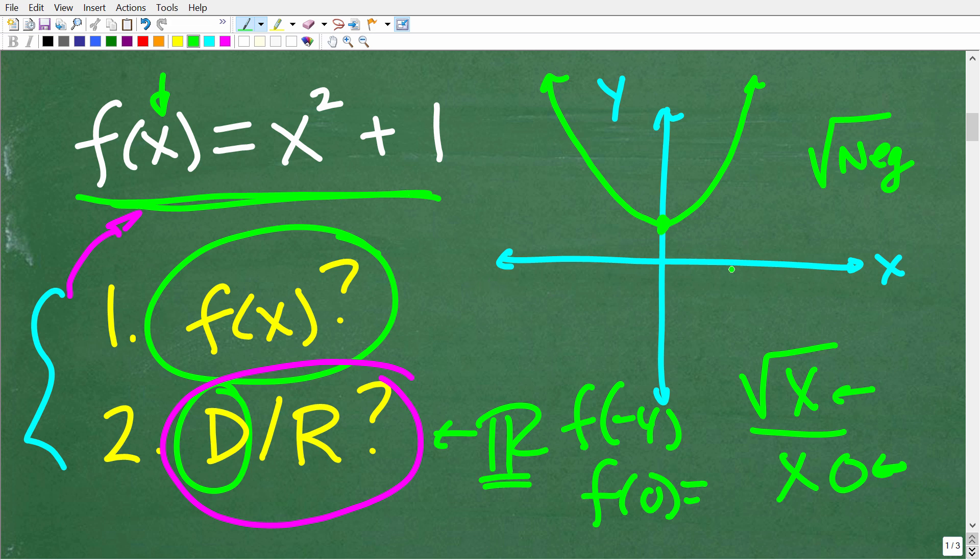Basically, the entire real number set is the domain. There's different ways you can express that. But, graphically, the easiest way to see this is that this graph is spanning the entire x-axis. The x-axis is the independent variable. It is associated with the domain, and you can see this graph is spanning the entire x-axis.